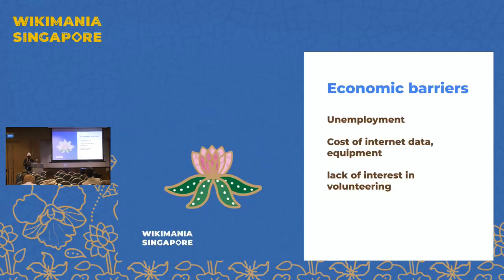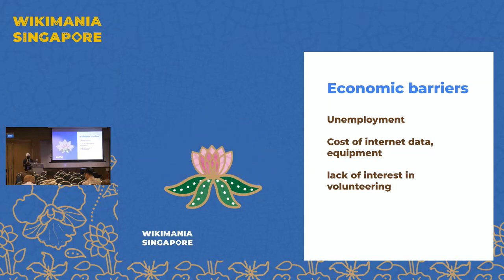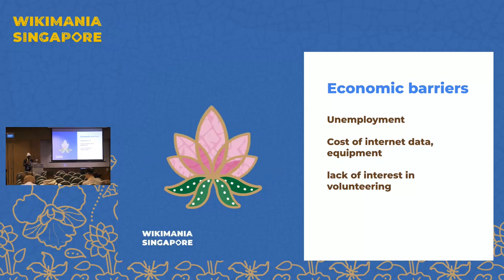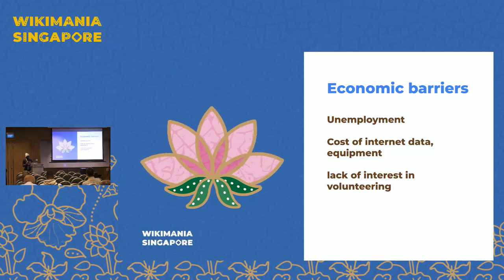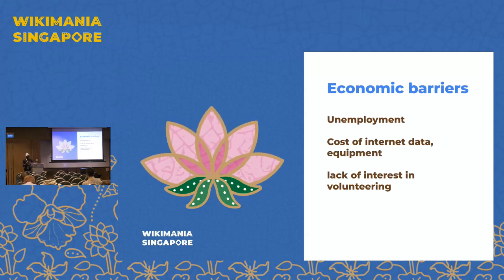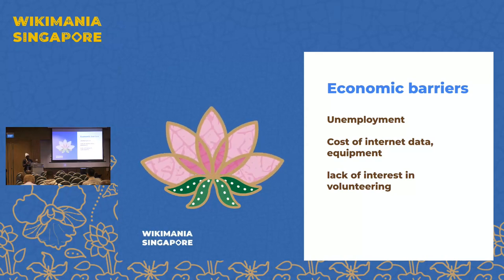We looked at the economic barriers. Most of the community members we engaged complained of not having enough time to contribute to Wikipedia. Some complained about the cost of internet data and equipment — challenges most are already familiar with from communities in the global south, especially in Africa. There are also unemployment issues related to these economic barriers. The most surprising thing was the lack of interest in volunteering — what exactly is stopping people from contributing to Wikipedia or being volunteers?